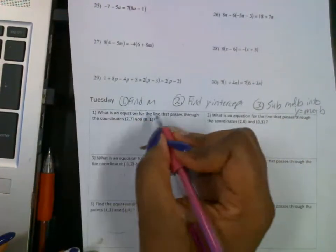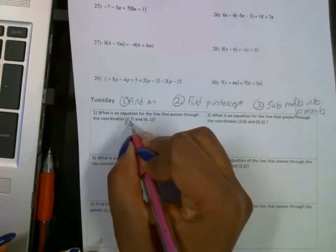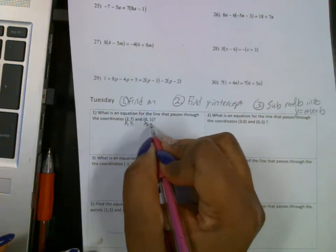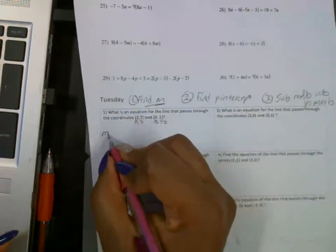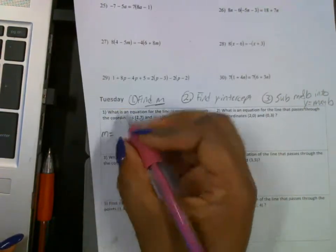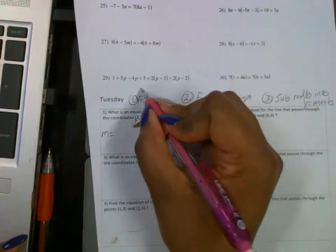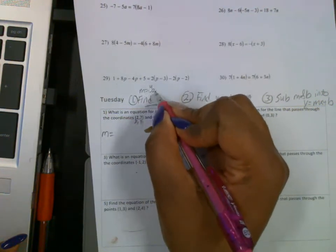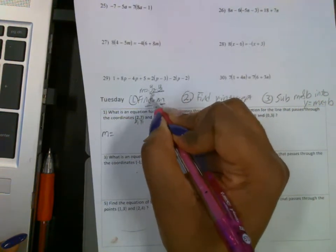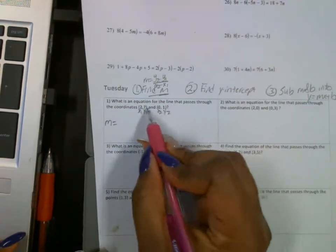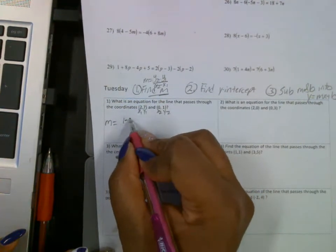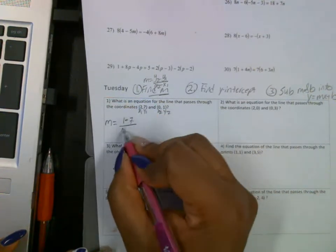Okay, so first step: x1, y1, x2, y2. We're finding the slope. So use the slope formula, which is y2 minus y1 over x2 minus x1. On the top, we got 1 minus 7. On the bottom, we have 0 minus 2.